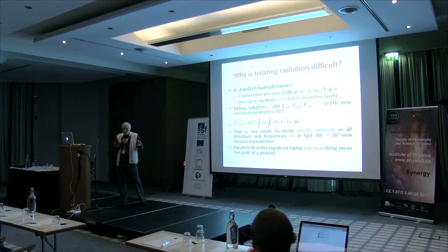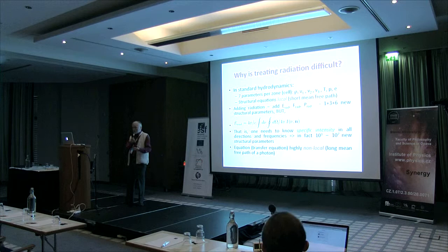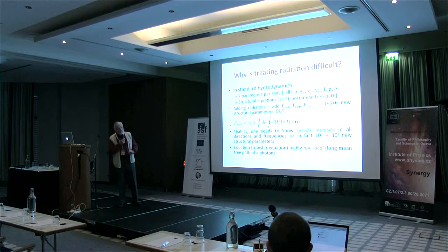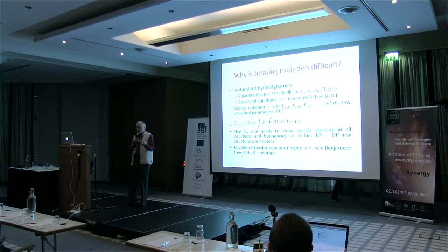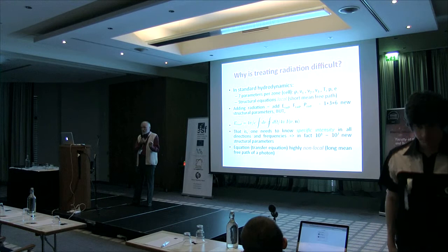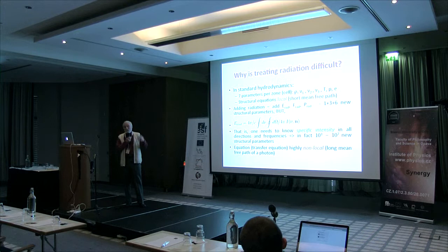So why is radiation difficult? An accretion disk should be modeled by some sort of hydro or radiation hydro. In standard hydro — not magneto hydro, just hydro — one has essentially seven quantities per cell: density, three components of velocity, temperature, pressure, and internal energy. One has to solve those seven equations. These equations are essentially local because the mean free path of particles is very short, so they are local differential equations.